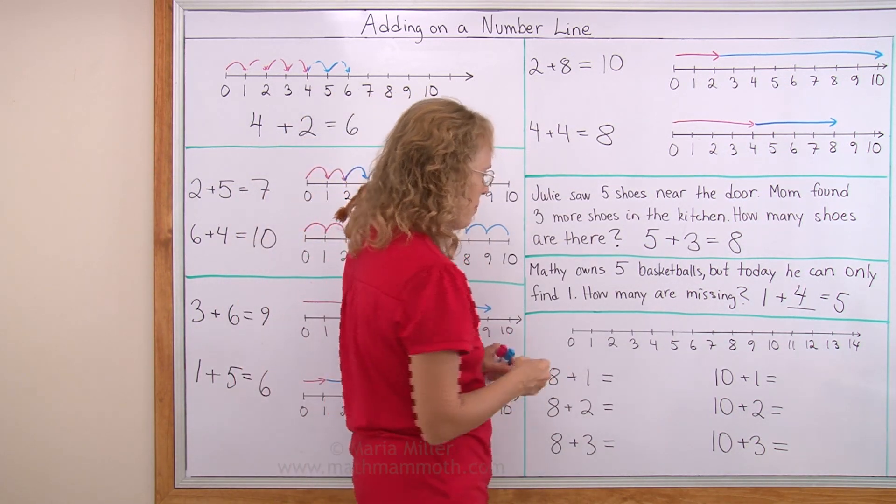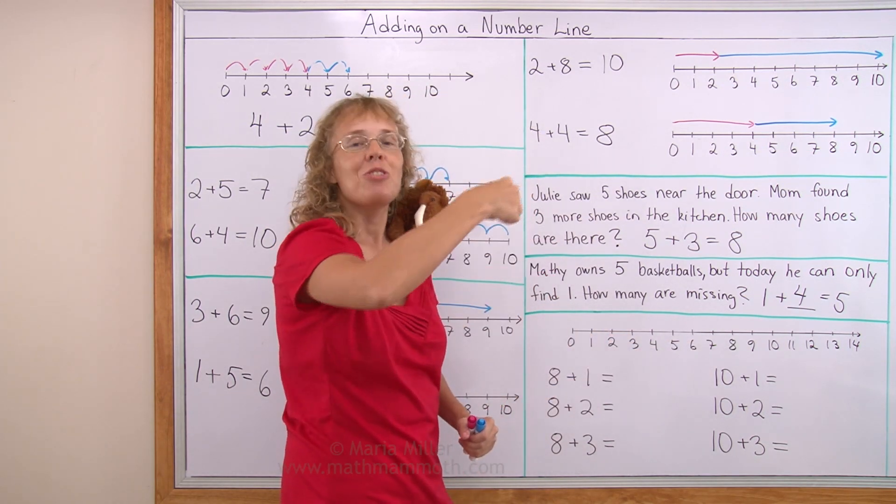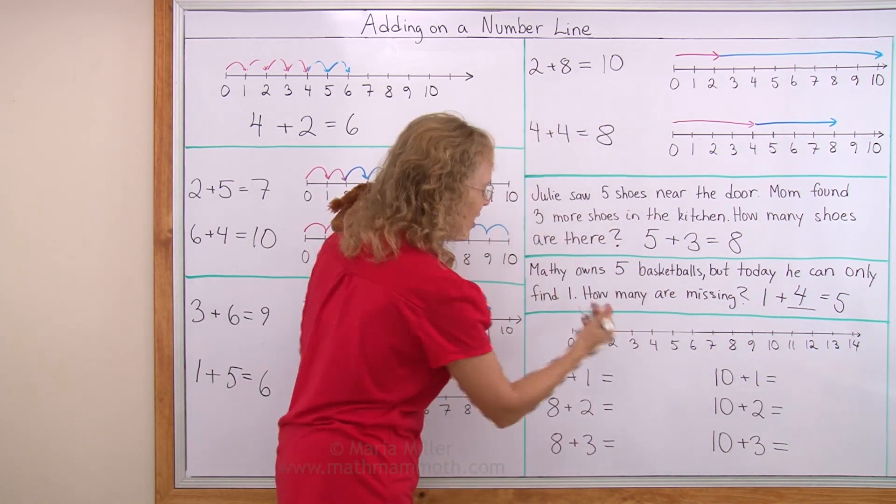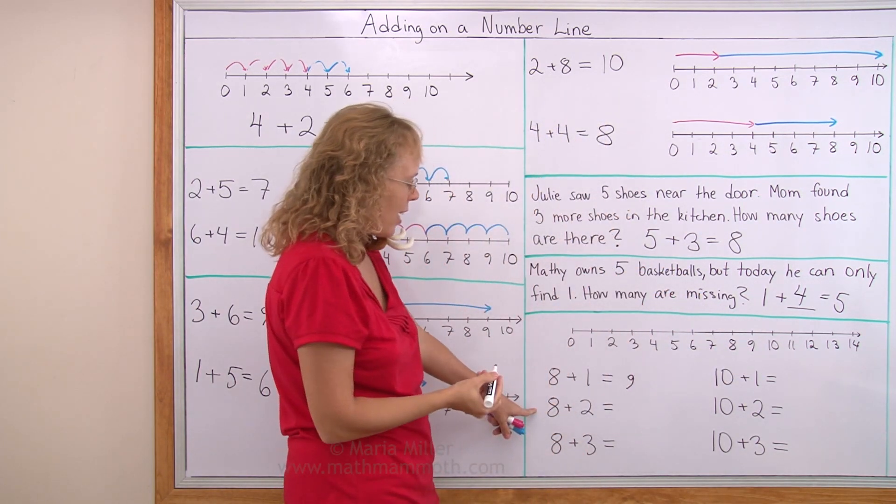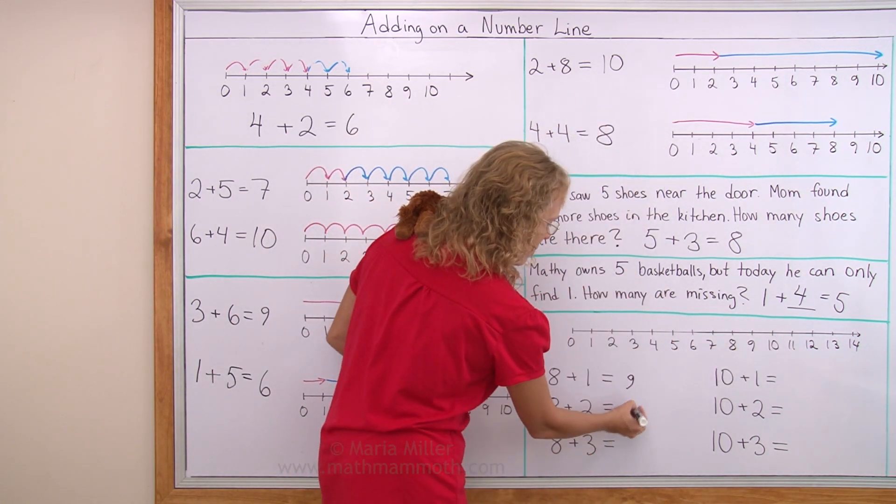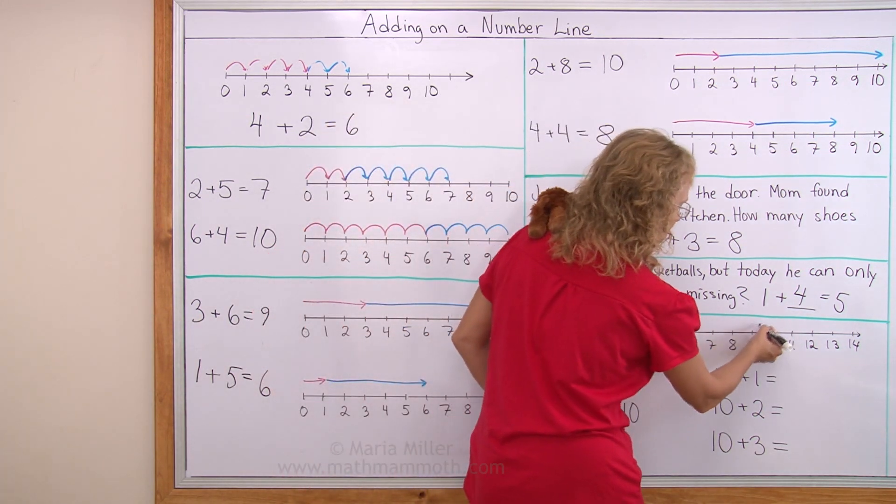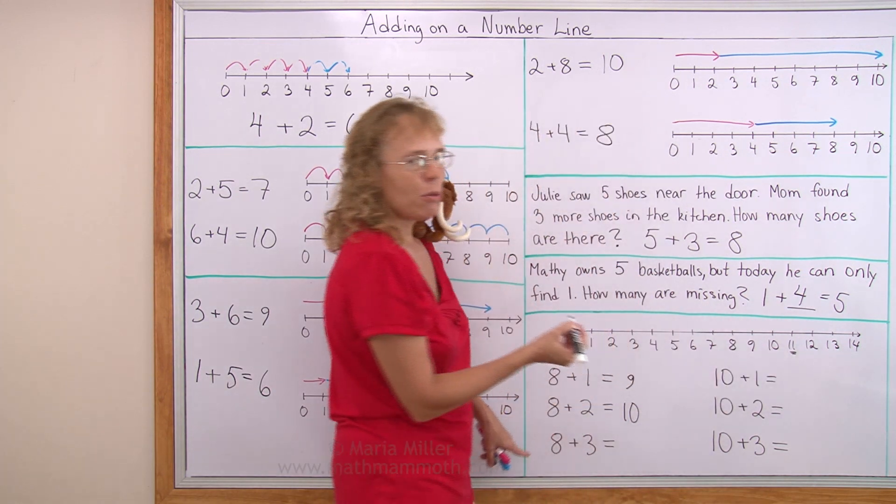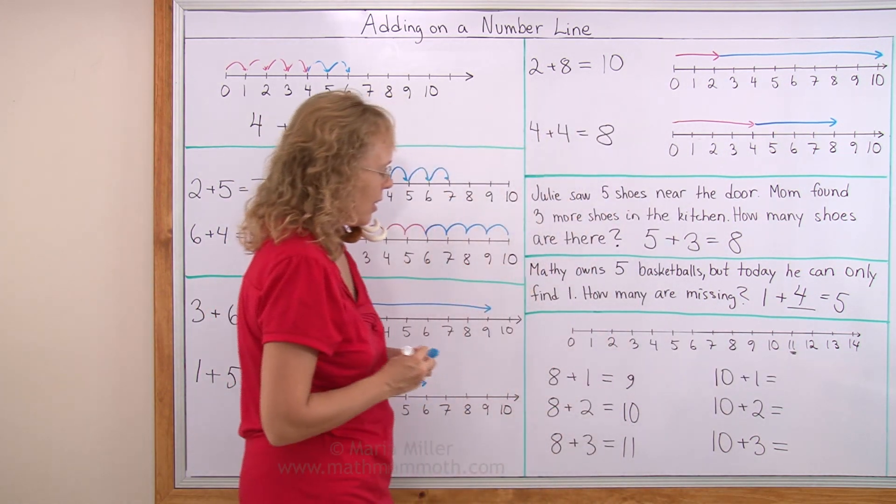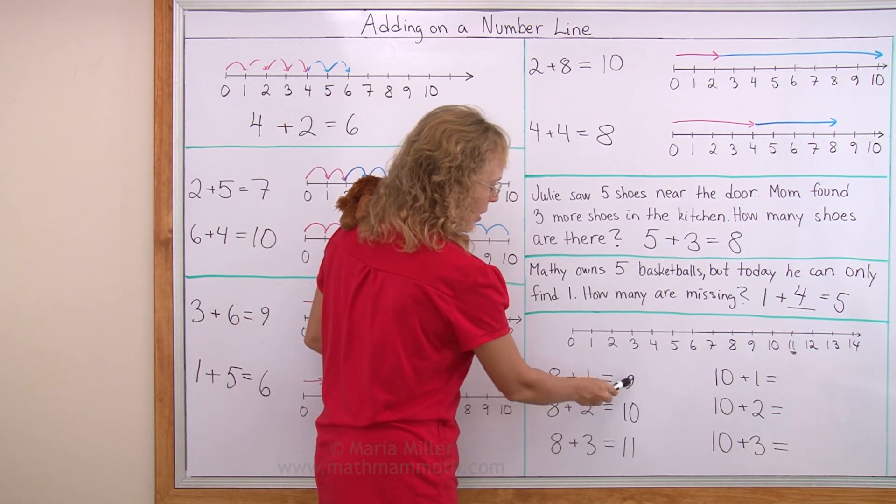8 plus 1. Imagine that you are at 8 over here. Plus 1 means you jump 1 more from 8 to 9. That's easy. Now if you're here at 8 and you jump 2 more, you go to 10. If you're at 8 and you jump 3 more, you go to this number. If you don't know what that number is, it's called 11. There was a little pattern here. 1, 2, 3, 9, 10, 11.